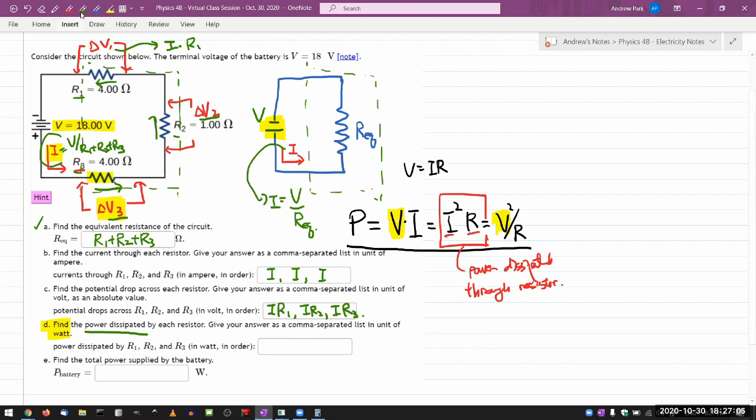So for this question, I would recommend just use that formula. You already found the current. Use that and calculate I squared R1, I squared R2, and I squared R3 to find the answer. And you can also use this third formula and use the voltage you found in the previous step. That's fine. It'll give you the same answer.